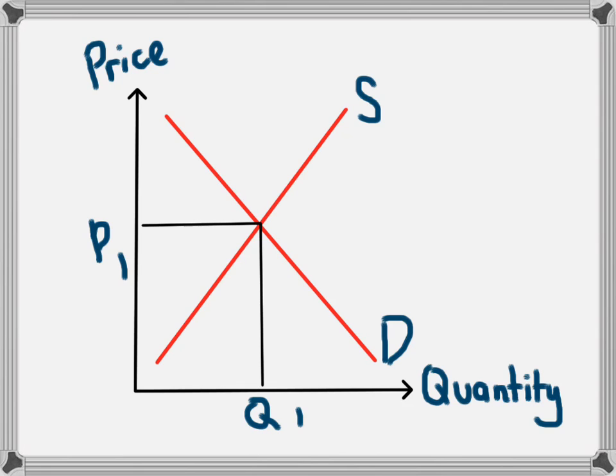Point A is known as the equilibrium point, and it gives us an equilibrium price of P1 and an equilibrium quantity of Q1. To understand how we arrive at equilibrium, watch the video on excess supply and excess demand.